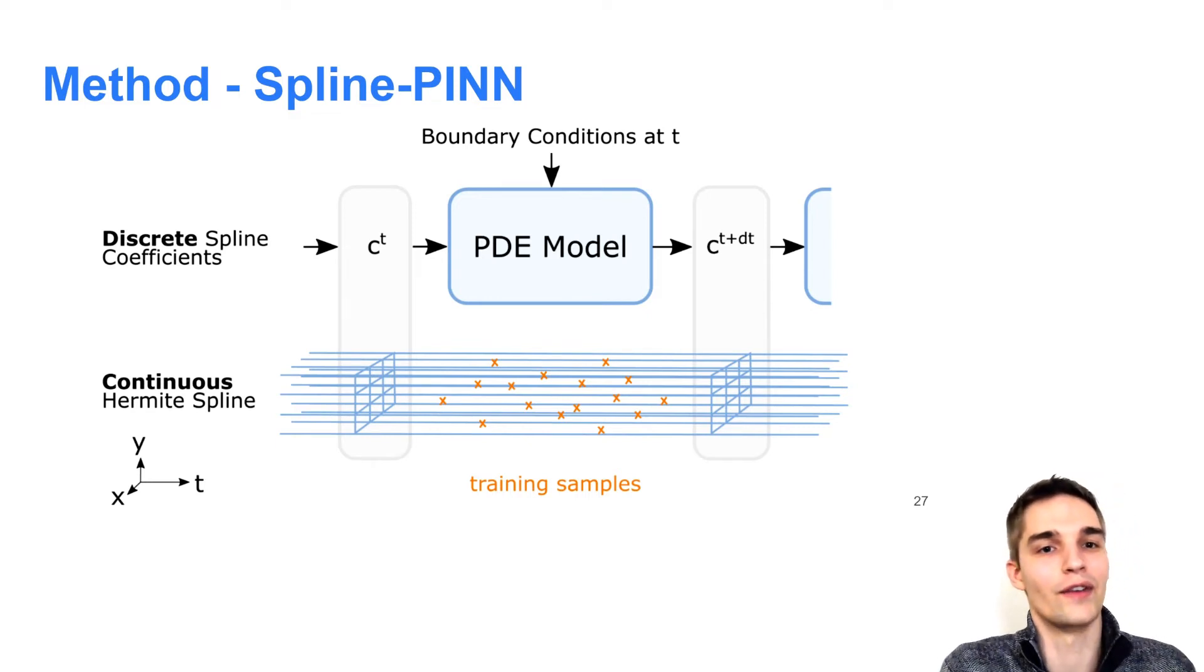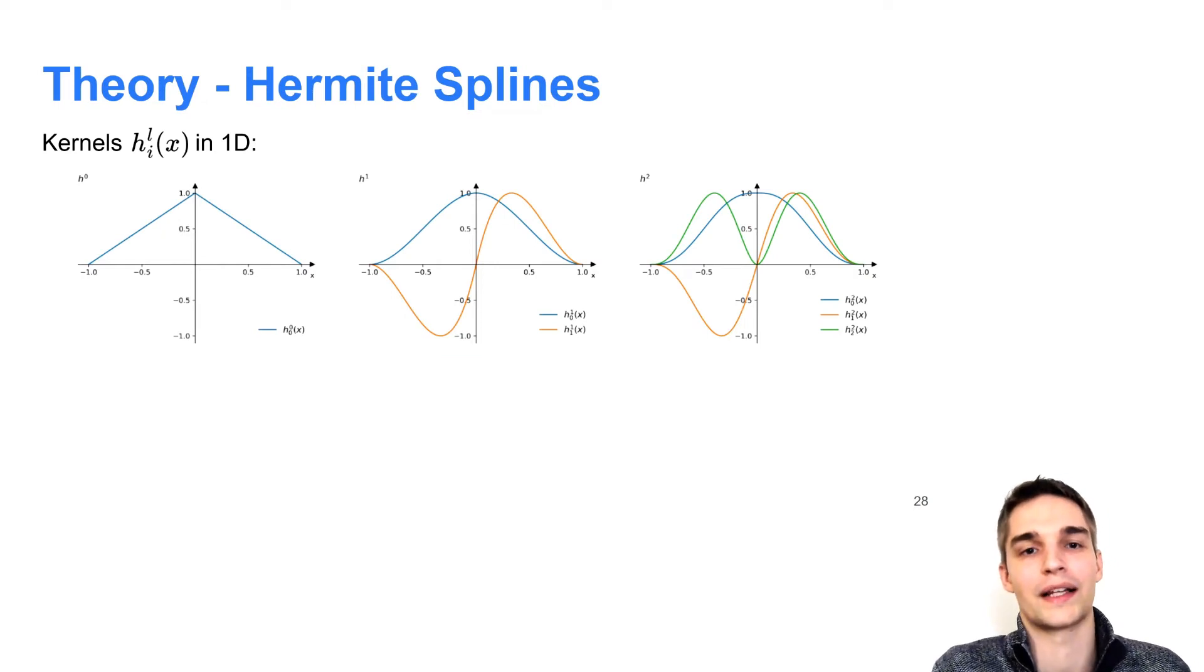To obtain continuous field values from these discrete spline coefficients, we interpolate with Hermite spline kernels. Hermite spline kernels of degree L are piecewise polynomials, and an important property of Hermite splines of order L is that their L plus 1 derivatives are of bounded variation. For example, for L equal 0, we can take the first derivative and obtain a bounded function. If we would take the second derivative, we would run into problems at the support points. For L equal 1, we can take the first and second derivatives. And for L equal 2, we also can take third derivatives and still obtain bounded functions. This will become important later when we want to compute the physics-informed loss, since we have to choose the right Hermite spline order depending on the order of the PDE.